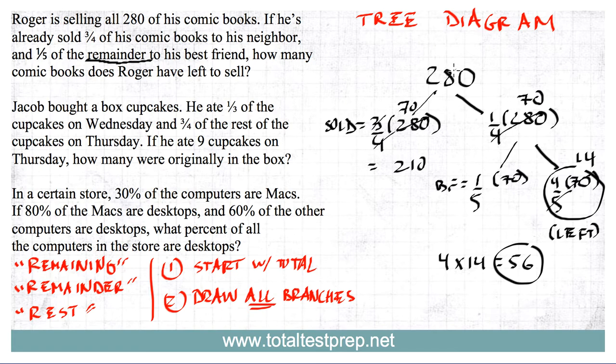What we've done was just start with the total, and anytime there is some sort of breakdown given, we write all of the branches. In this case there are two branches each time. Let's take a look at the next one.